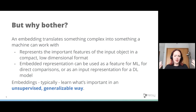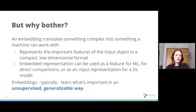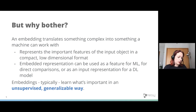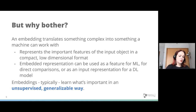You might be thinking: why bother? We're doing a lot of math to take something complicated and make it simple. The embedding captures the important features of your input object for the task you want to use it for, in a compact way. That representation can then represent your graph for machine learning or deep learning. Generally speaking — not always — they learn what's important in an unsupervised, generalizable way. You can apply the technique to any context window for a word or any graph for DeepWalk, ending up with a custom, generalizable representation for your use case.